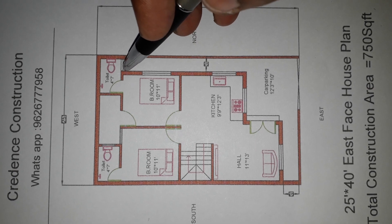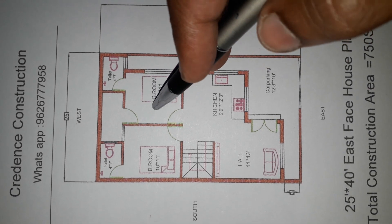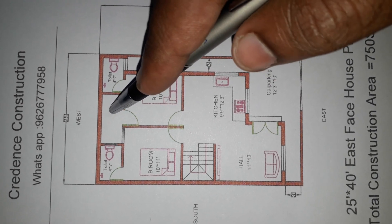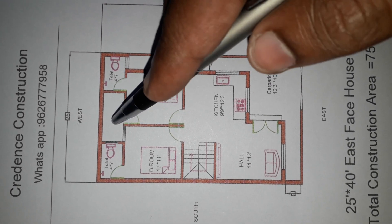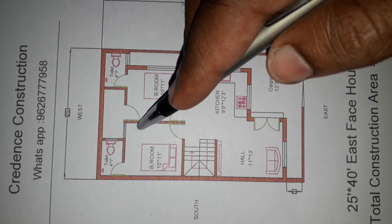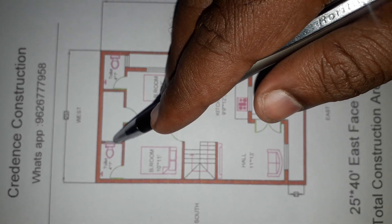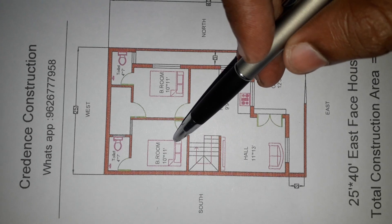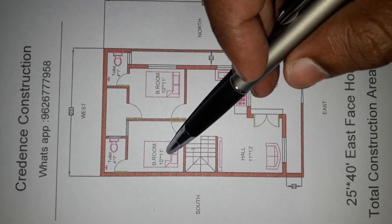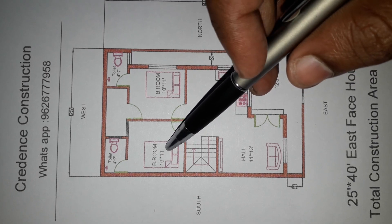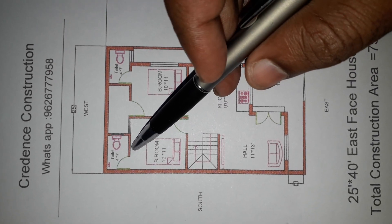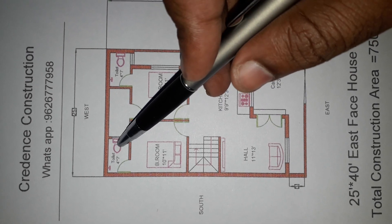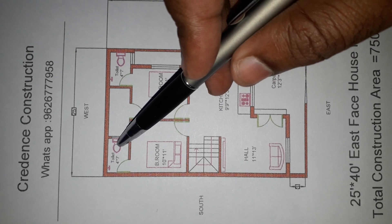There is a ventilator in the bathroom. A back door leads to a small garden area of about 5 feet on the side. The second bedroom size is 10 feet by 11 feet, with a window of 4 feet by 3 feet, and an Indian closet.